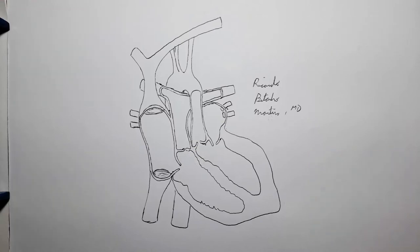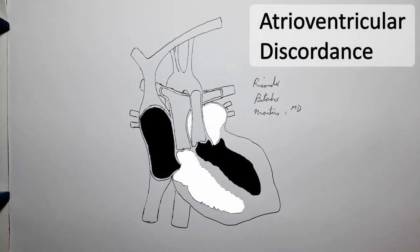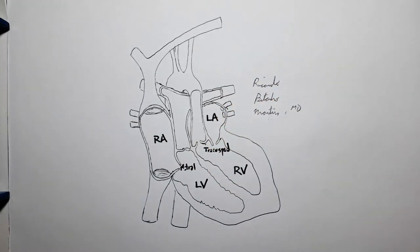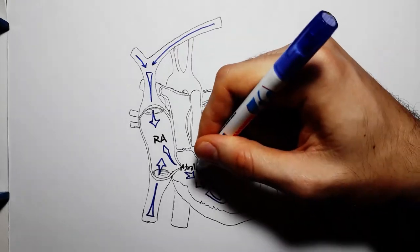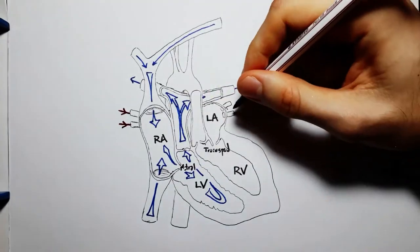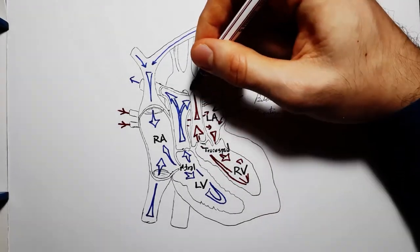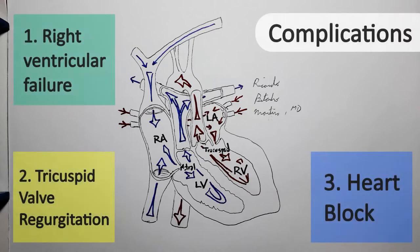Anatomically speaking, in LTGA or CCTGA, we have both ventricular arterial discordance — which we also find in D-TGA — and additionally atrioventricular discordance, also known together as double discordance. This causes blood entering from the superior and inferior vena cava through the right atrium to flow through the mitral valve into the left ventricle before being pumped into the pulmonary trunk, going through the lungs and returning through the pulmonary veins to the left atrium, then being pumped through the tricuspid valve into the right ventricle, which forces blood into the aorta. This may lead long-term to the three major complications: right ventricular failure, tricuspid regurgitation, and complete heart block.